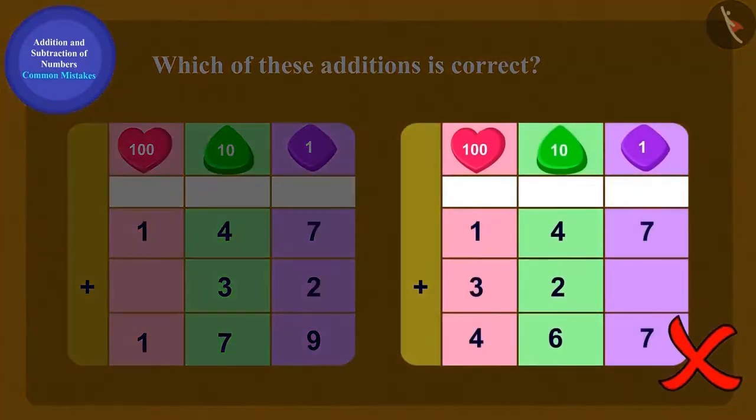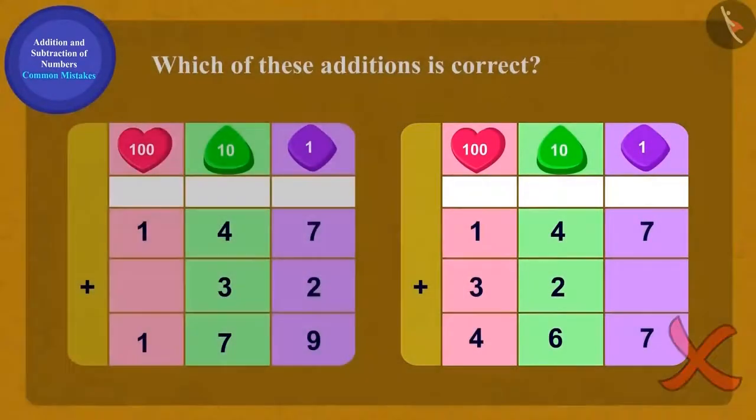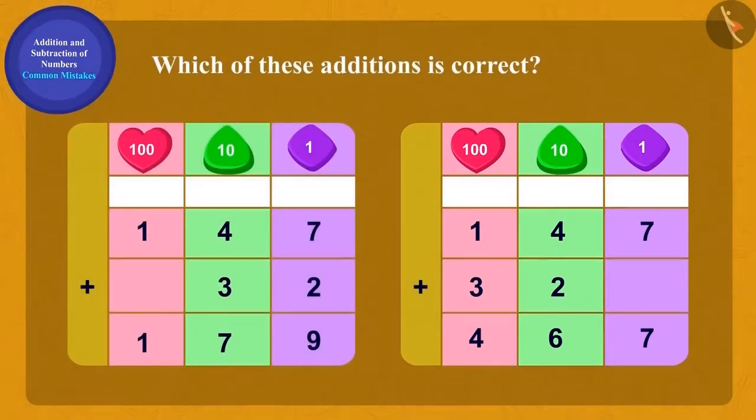But why is this wrong? Absolutely right. Here, while writing a two-digit number 32, we have written the digits in the wrong place. In which place should we write 3 of 32? Tens. And 2? Exactly. In the ones place.